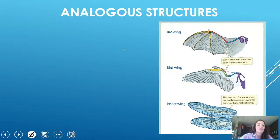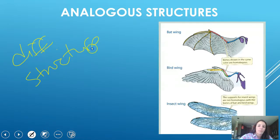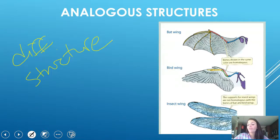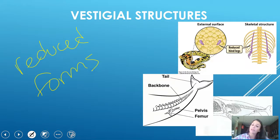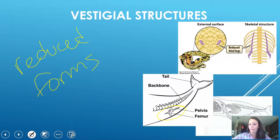Birds have hollow-boned wings, bats have regular-boned wings, and insects have no bones at all, but they all fly — different structure, same function. Vestigial structures are reduced forms of functional structures still present in other species. For example, whale ancestors used to live on land with four legs, so whales still have a pelvis and femur in their bodies. Same with snakes, which have reduced structures from what their ancestors had as hind legs.